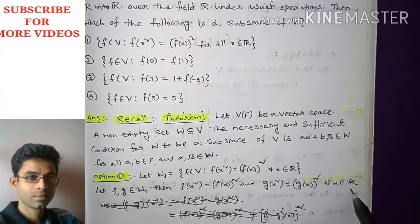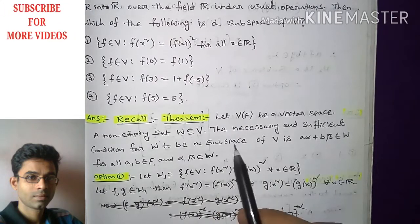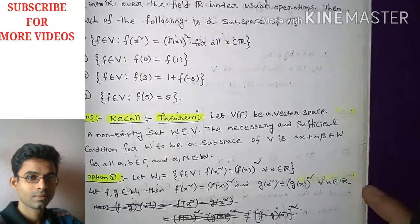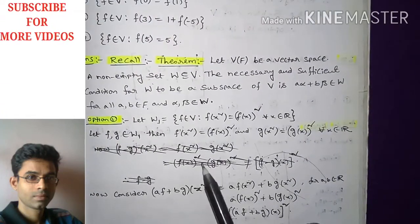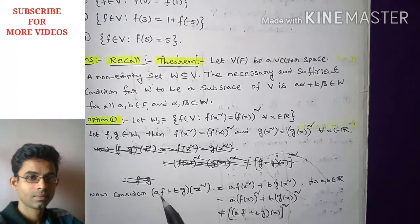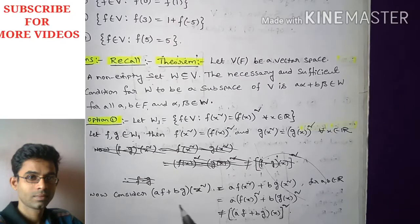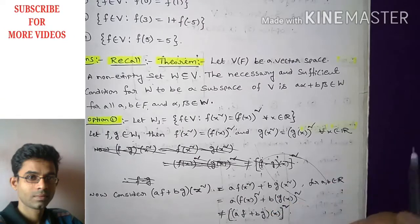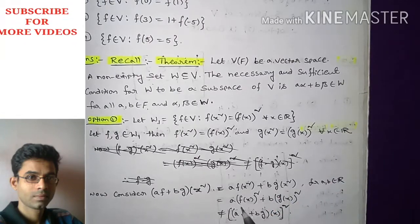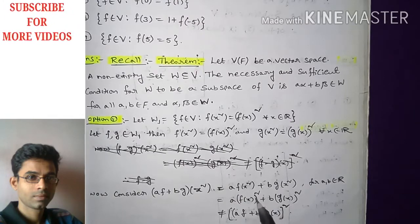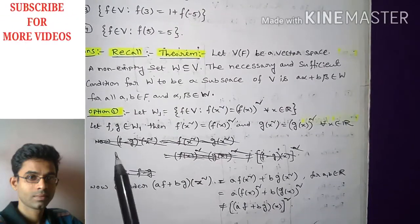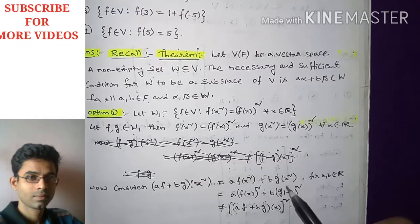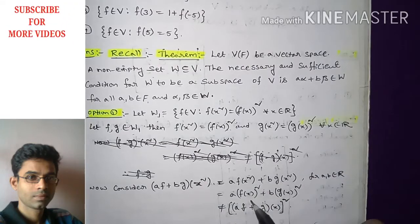To verify W₁ is a subspace of V, we need a·f + b·g to belong to W₁. Consider (af + bg)(x²). By linearity this equals a·f(x²) + b·g(x²) for all a, b in R. Since f and g belong to W₁, f(x²) = f(x)² and g(x²) = g(x)², so this equals a·f(x)² + b·g(x)².